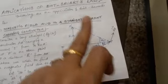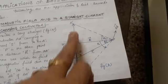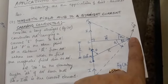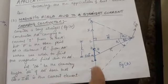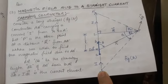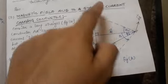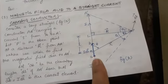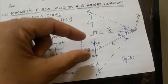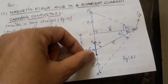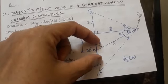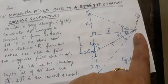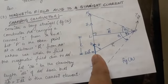I have taken a straight current-carrying conductor AA-dash in which a current I is flowing. P is the observation point at a perpendicular distance R from this current-carrying conductor, and I wish to find the magnetic field at point P due to the whole conductor. First I find the magnetic field at point P due to a small current element IDL vector whose centre is M, and joining M with P gives the distance R vector of the observation point from the current element.